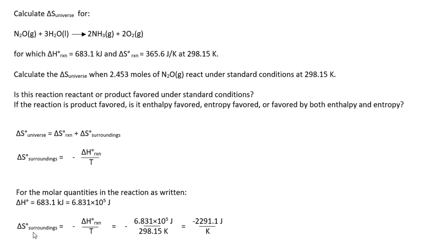And so we proceed and calculate ΔS_surroundings using the given ΔH_reaction. And after substituting those values in, we calculate the ΔS_surroundings as negative 2,291.1 joules per kelvin.